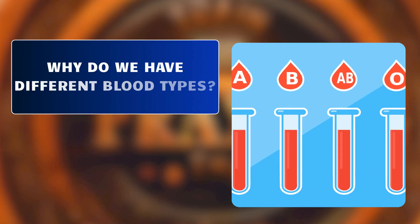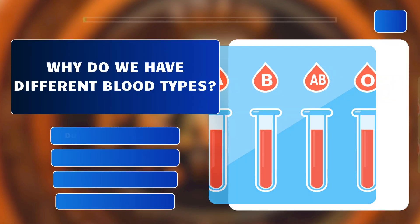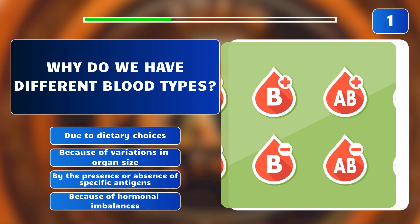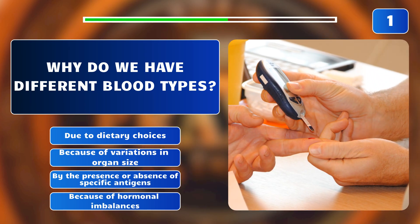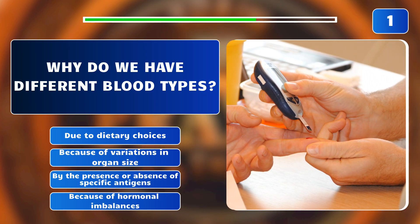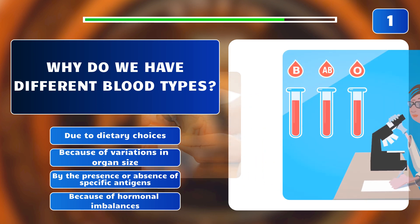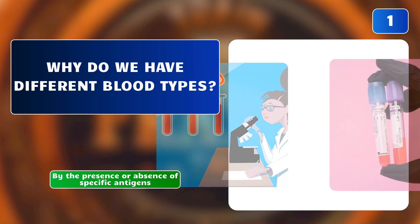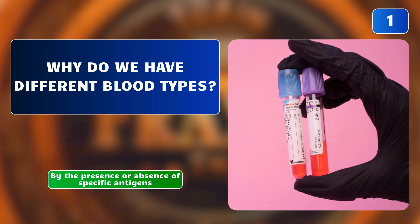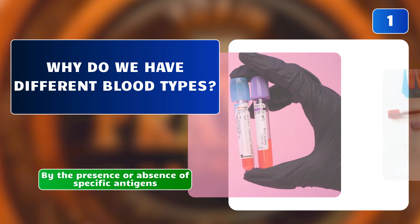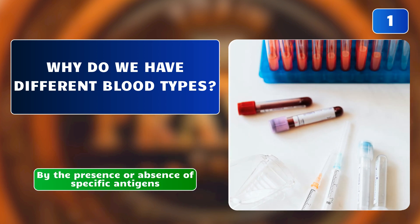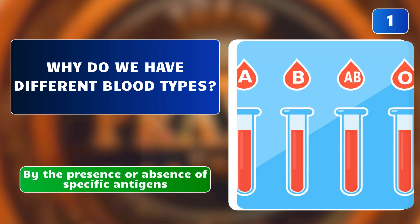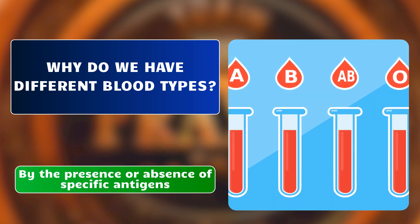Why do we have different blood types? Due to dietary choices? Because of variations in organ size? By the presence or absence of specific antigens? Because of hormonal imbalances? The correct answer is: by the presence or absence of specific antigens. Blood types are determined by the presence or absence of specific antigens on red blood cells, inherited from parents.